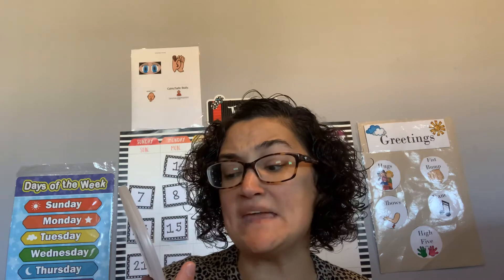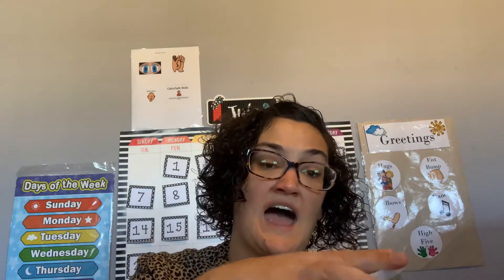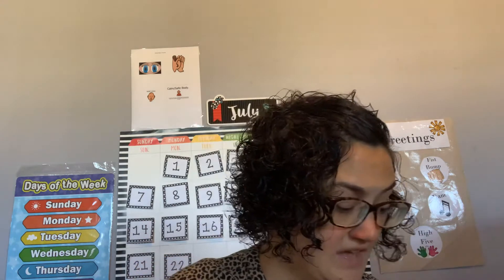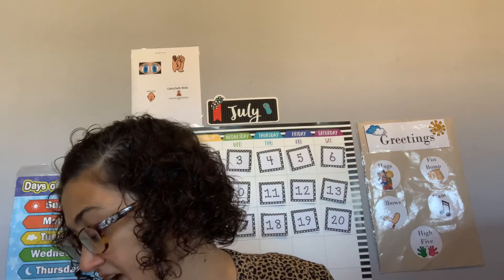And that is it for the P bucket. Let's make sure we have it all — we found a pig, pan, paint, pizza, pumpkin, and pickle. It is all in my P bucket, so the P bucket is done. We put the lid on and we move on to our last letter.